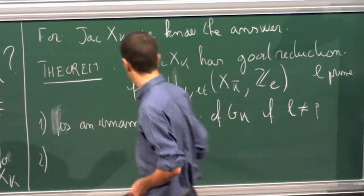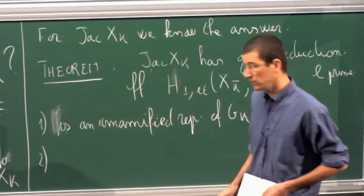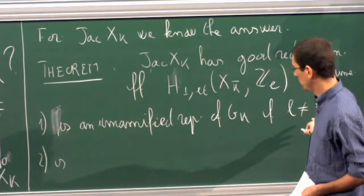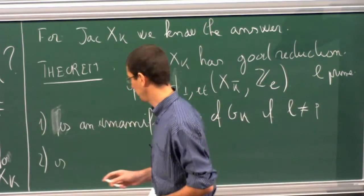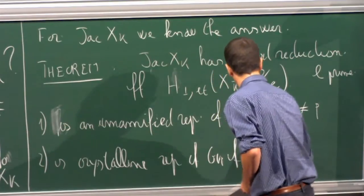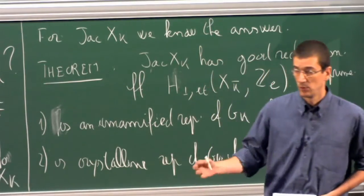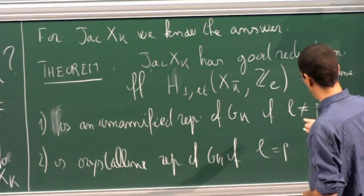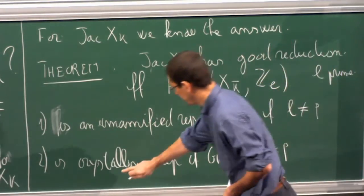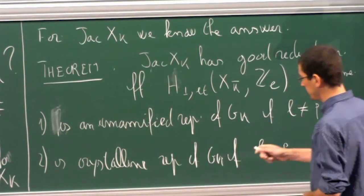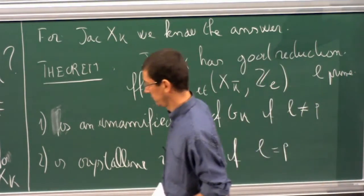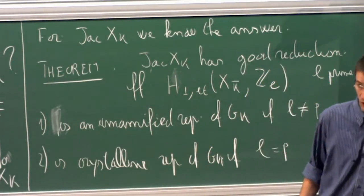If l equals p, the representation can never be unramified, otherwise the p-rank of the abelian variety would be twice the dimension, which is impossible. The next approximation for l equal to p is Fontaine's notion of crystalline representation. For the l ≠ p case, this is the well-known Néron-Ogg-Shafarevich criterion, and in general a theorem of Serre-Tate. For the l = p direction: if the Jacobian has good reduction, the crystallinity is work of Fontaine-Faltings; the converse is due to Faltings-Mokrane, Adrian Yovita, Robert Coleman, and Christoph Breuil.